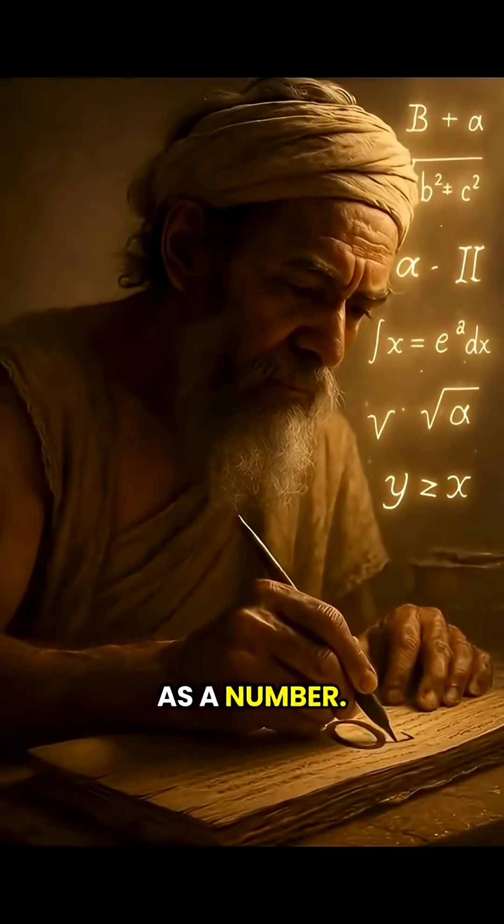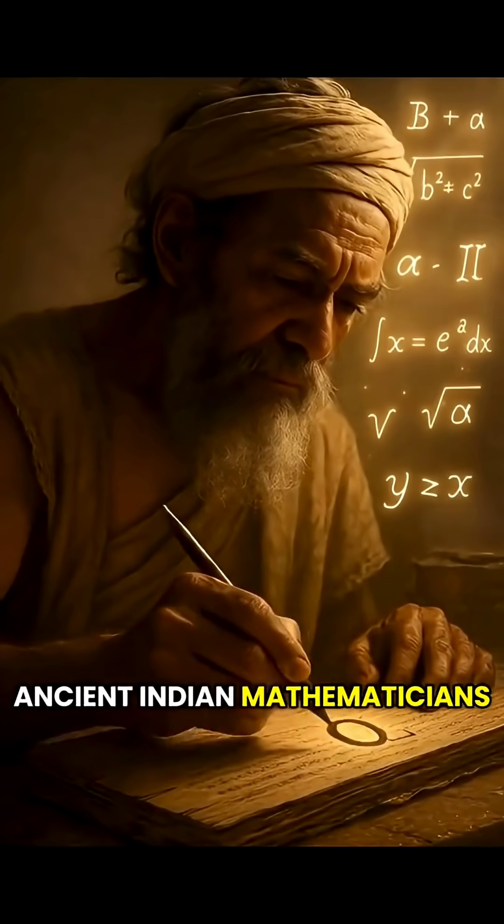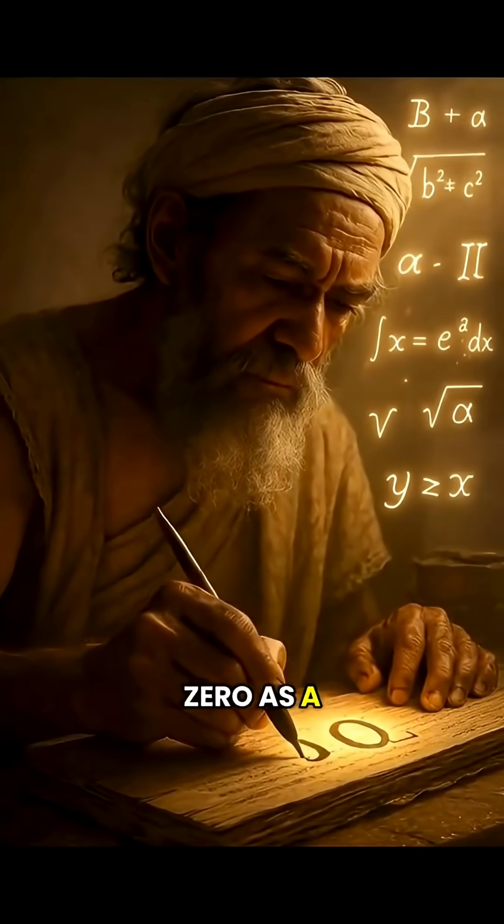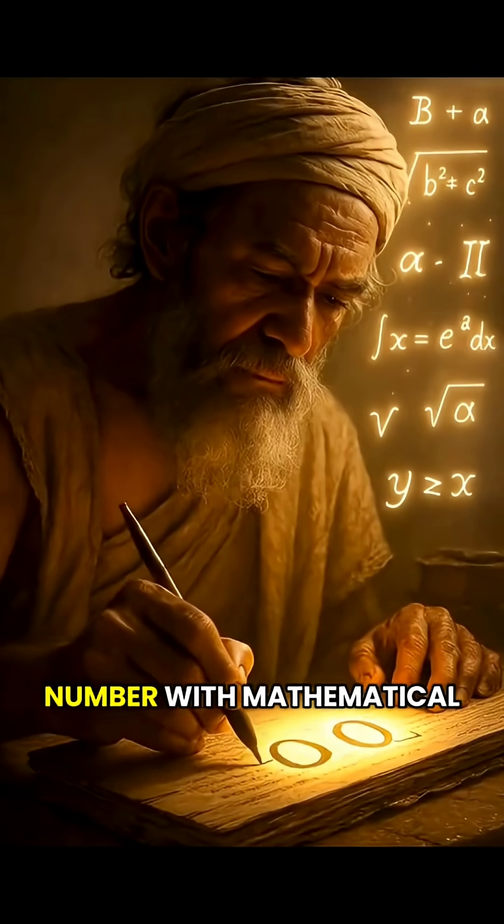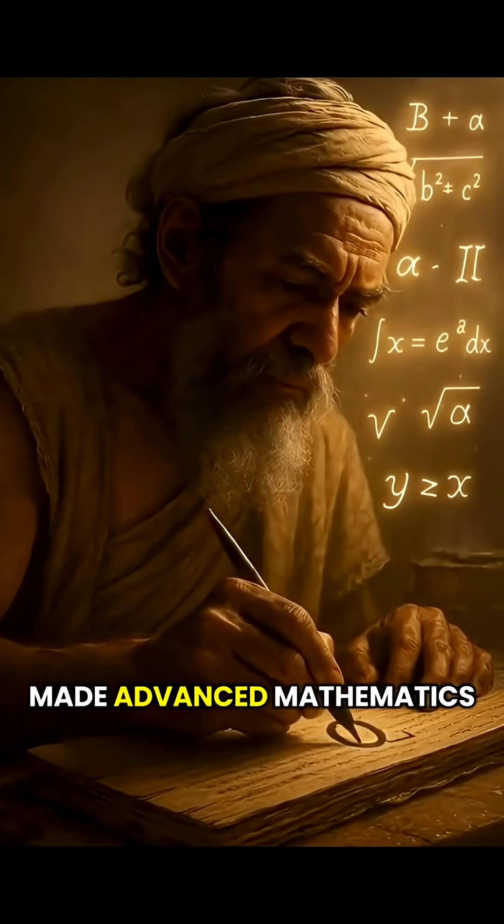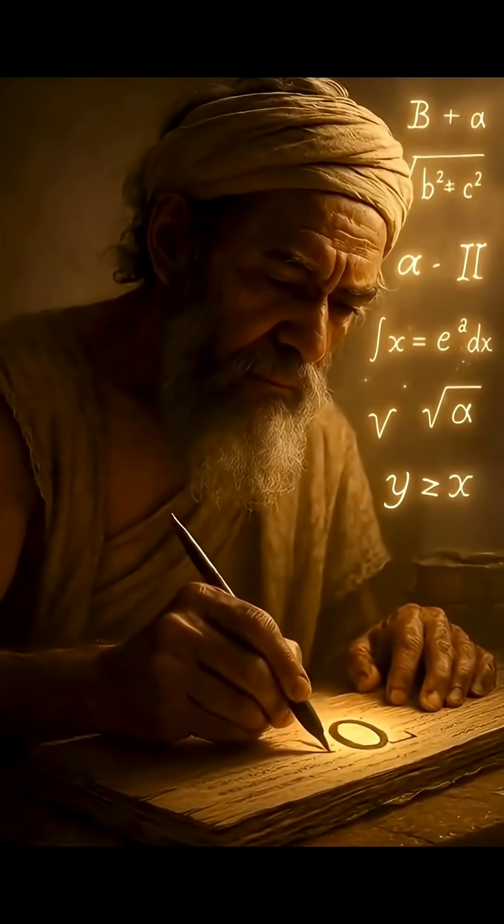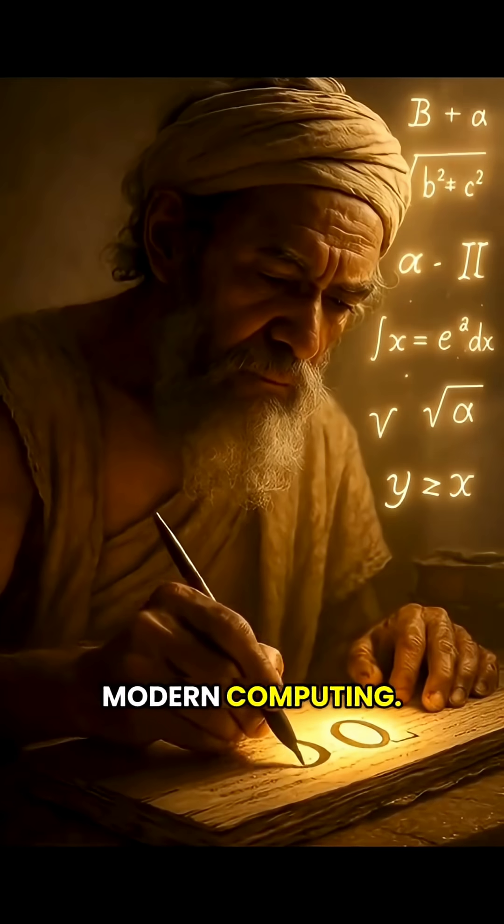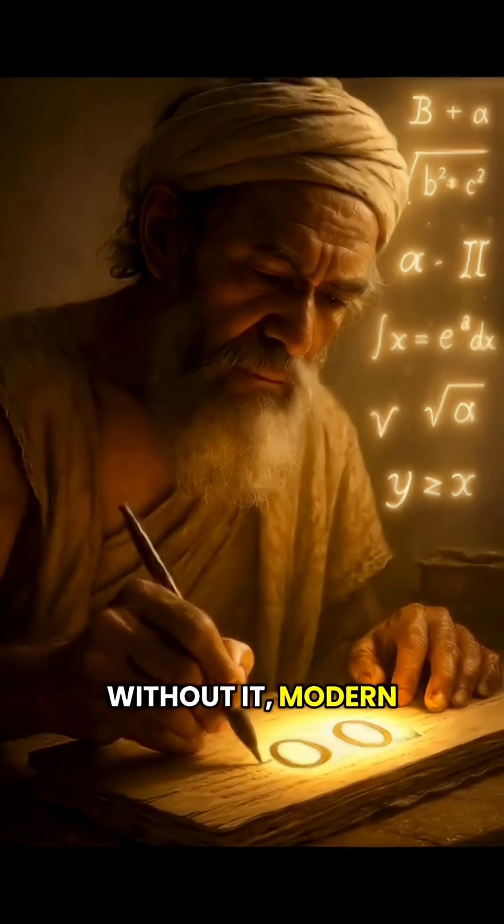Number five, the concept of zero as a number. Ancient Indian mathematicians didn't just use zero as a placeholder. They treated it as a real number with mathematical rules. This single idea made advanced mathematics possible, from algebra to modern computing. Without it, modern science would collapse.